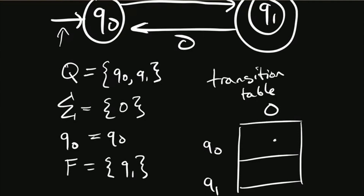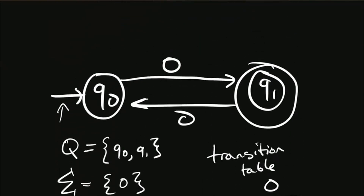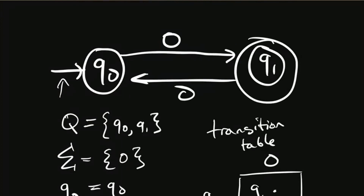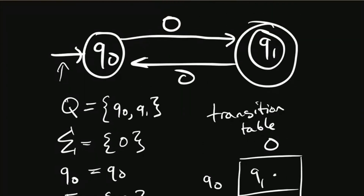Going from Q0 on input zero, the destination state is Q1. The other box has Q0. That's all five pieces, so we've completely and formally determined what this machine does. When I said 'total function,' that simply means the transition table has no holes — nothing is left blank. We've now specified the states, input alphabet, start state, final states, and transition table.